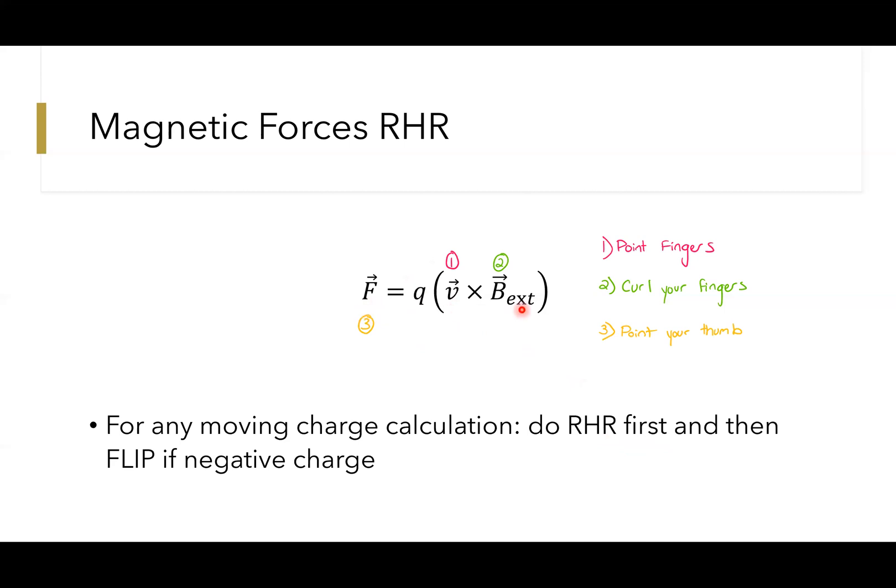Then if your Q is negative, flip the direction that you just got, flip the direction that your thumb just pointed. So let's say I did this right-hand rule and my thumb is pointing up, but my charge is actually negative, it's an electron. That means the force it's experiencing is actually down. That's a very important point.